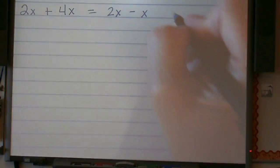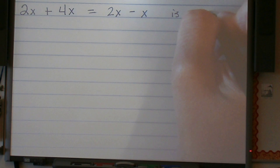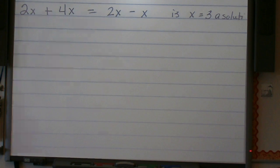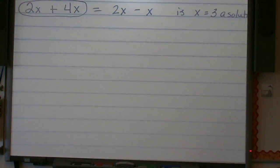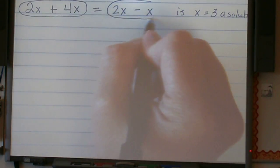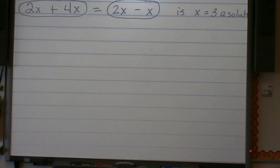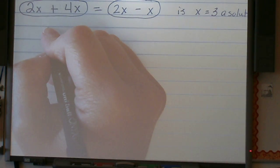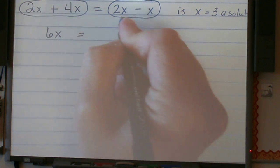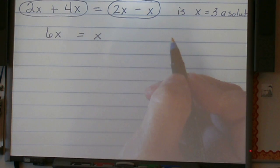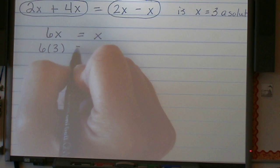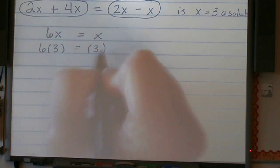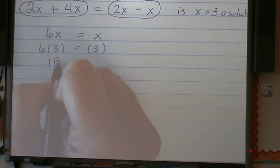I want to know, is x equal to 3 a solution? We're going to want to plug in our value. Now, I can go ahead and simplify this because I have two like terms. I can simplify the right-hand side of my equation first because I have two like terms. So 2x plus 4x is 6x, and 2x minus x is just x. Now I'm going to plug in my value for x. 6 times 3 equals 3. Now we simplify. 6 times 3 is 18, equals 3.